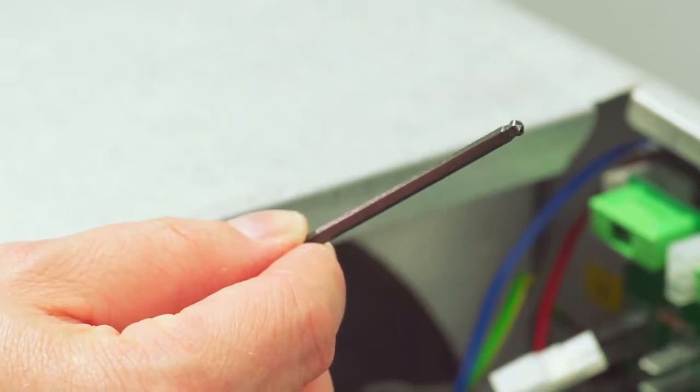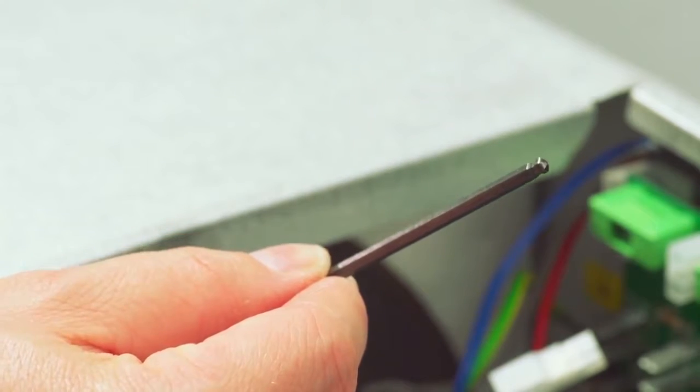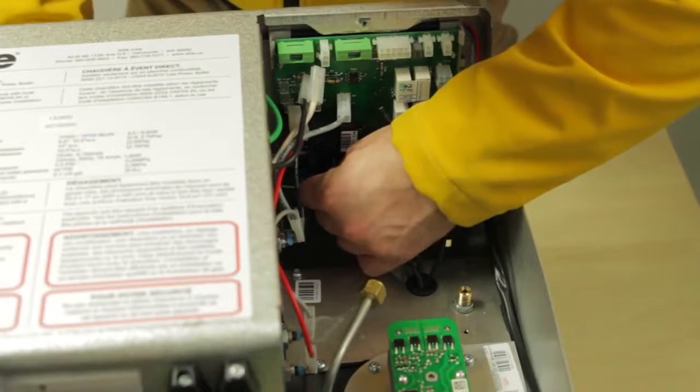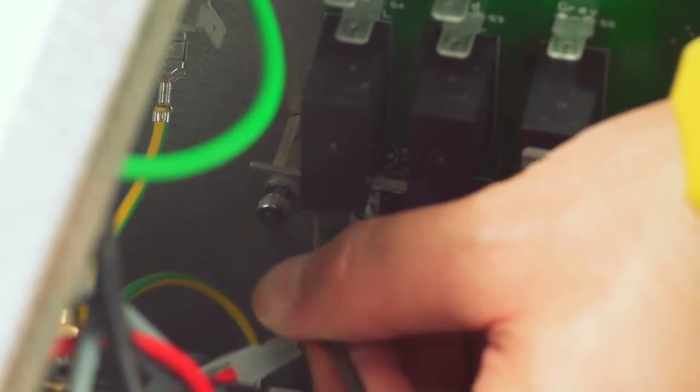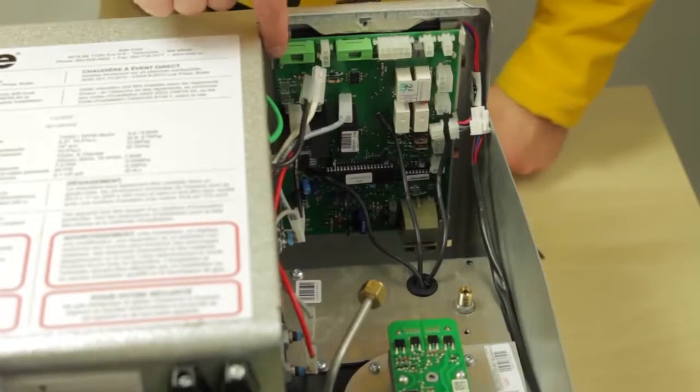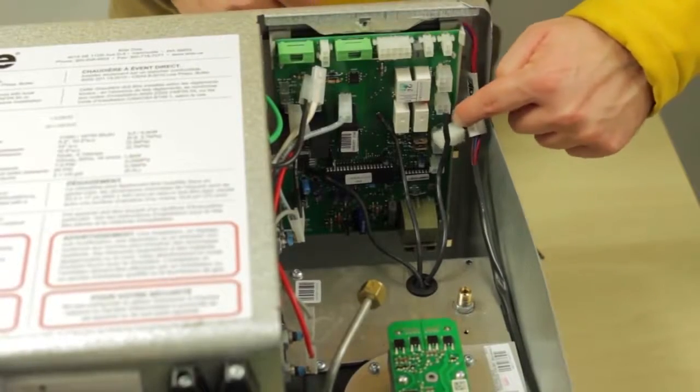Then loosen the earth screw with a 3mm allen key. This will allow you to unclip the PCB.